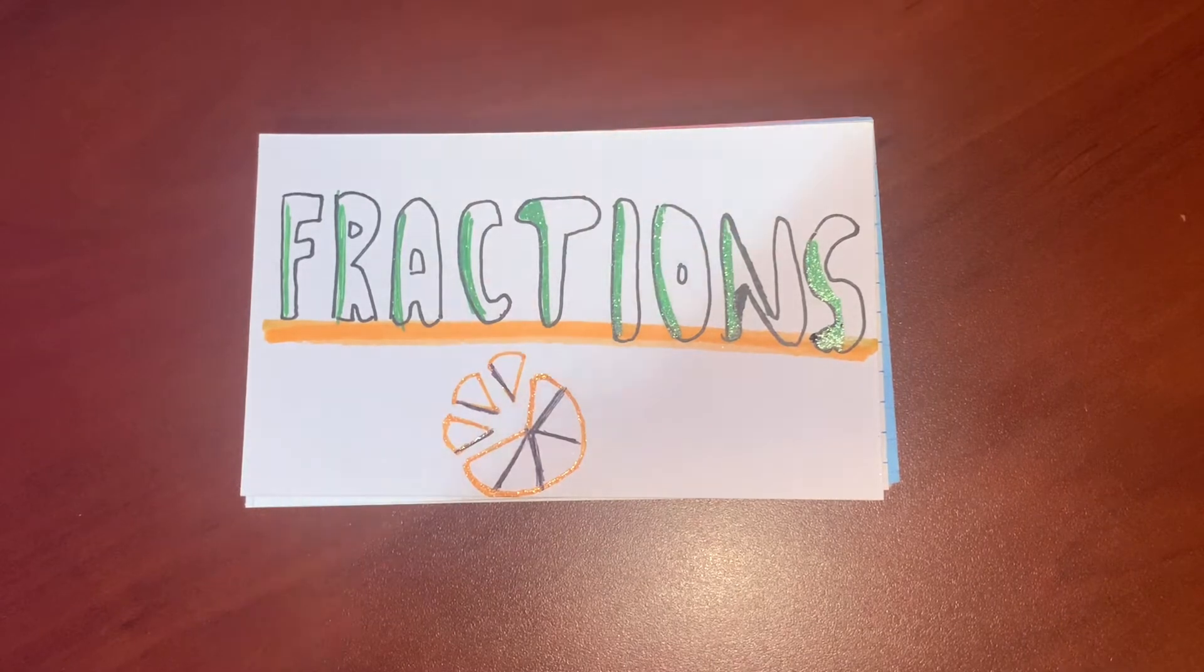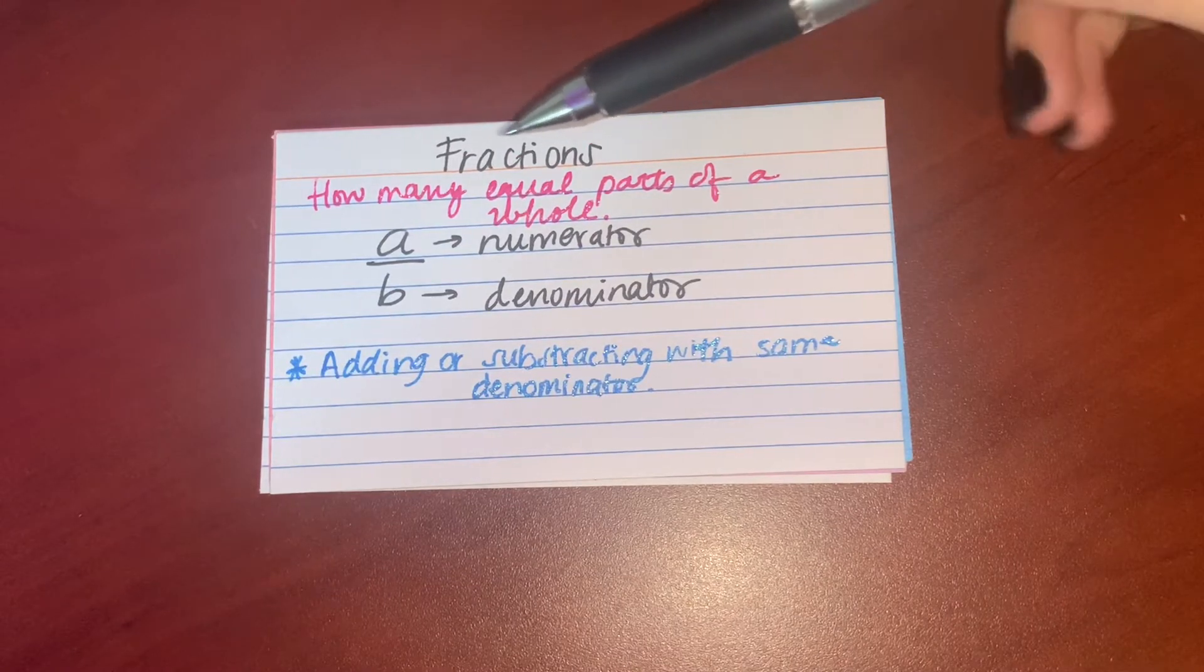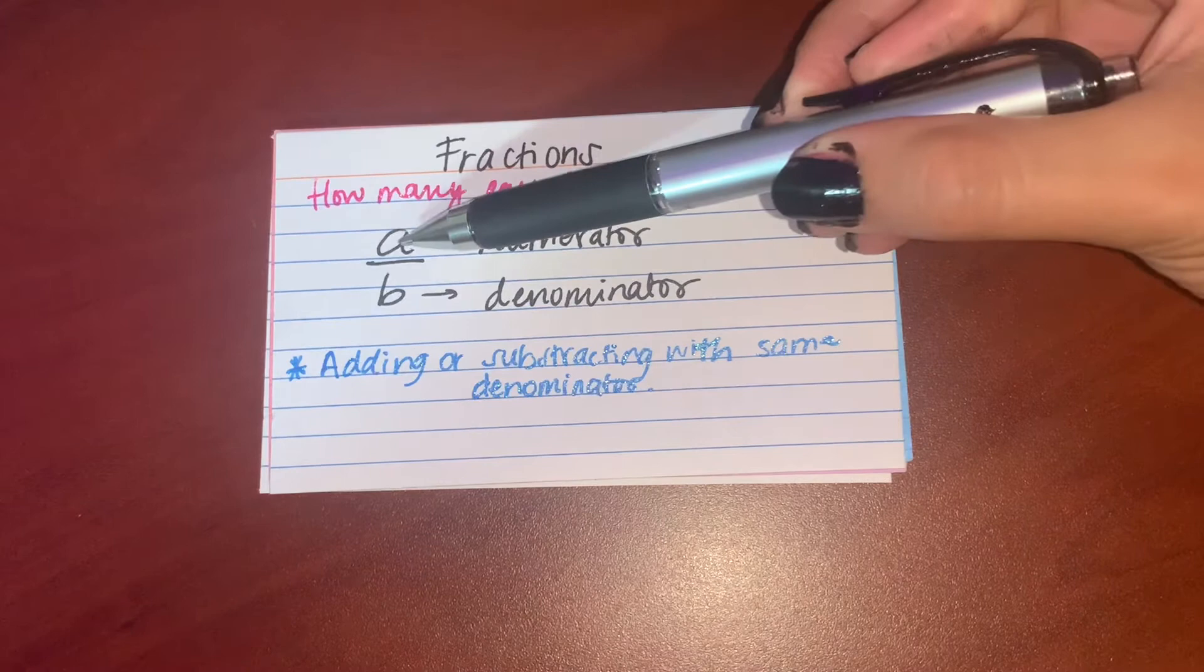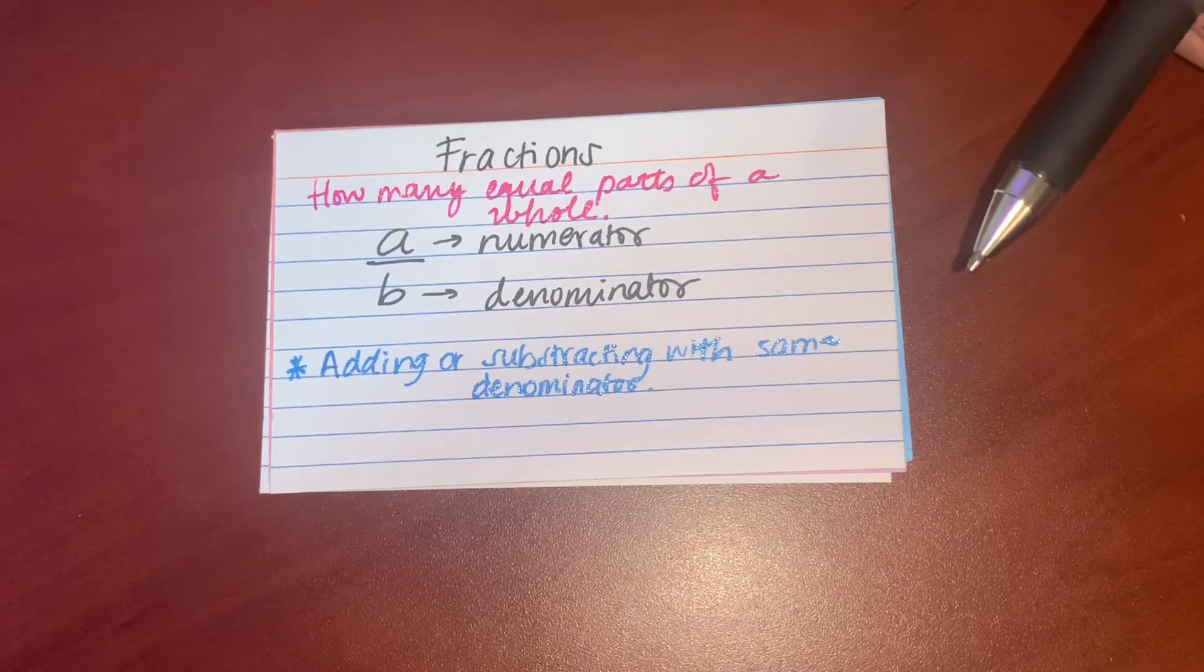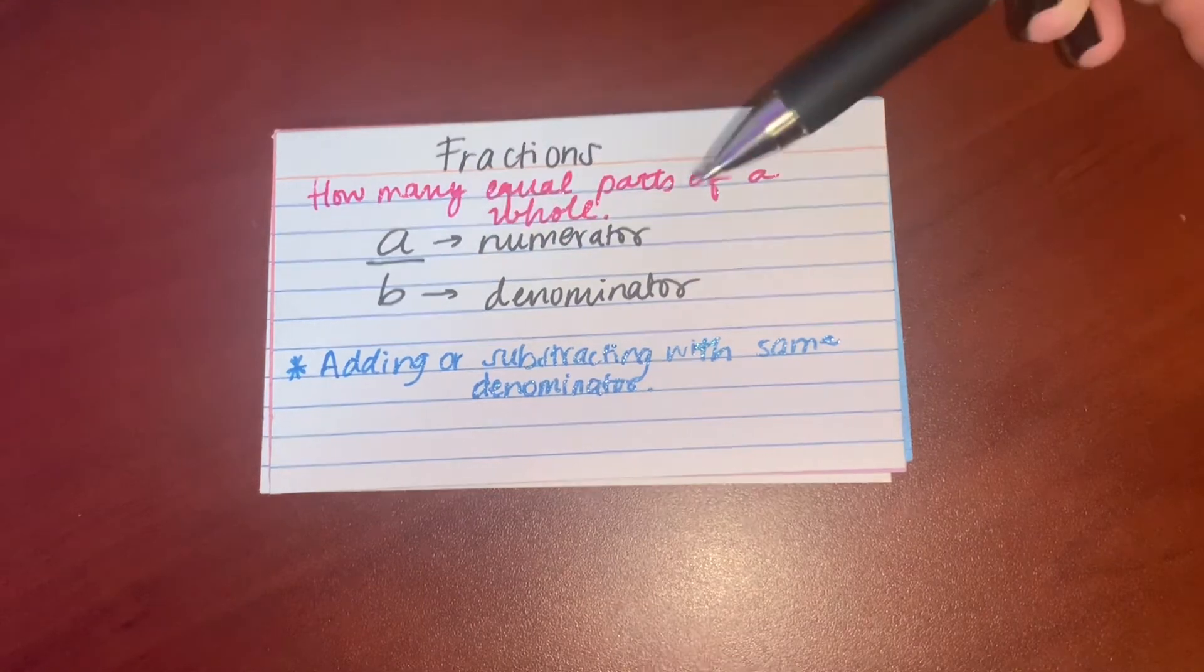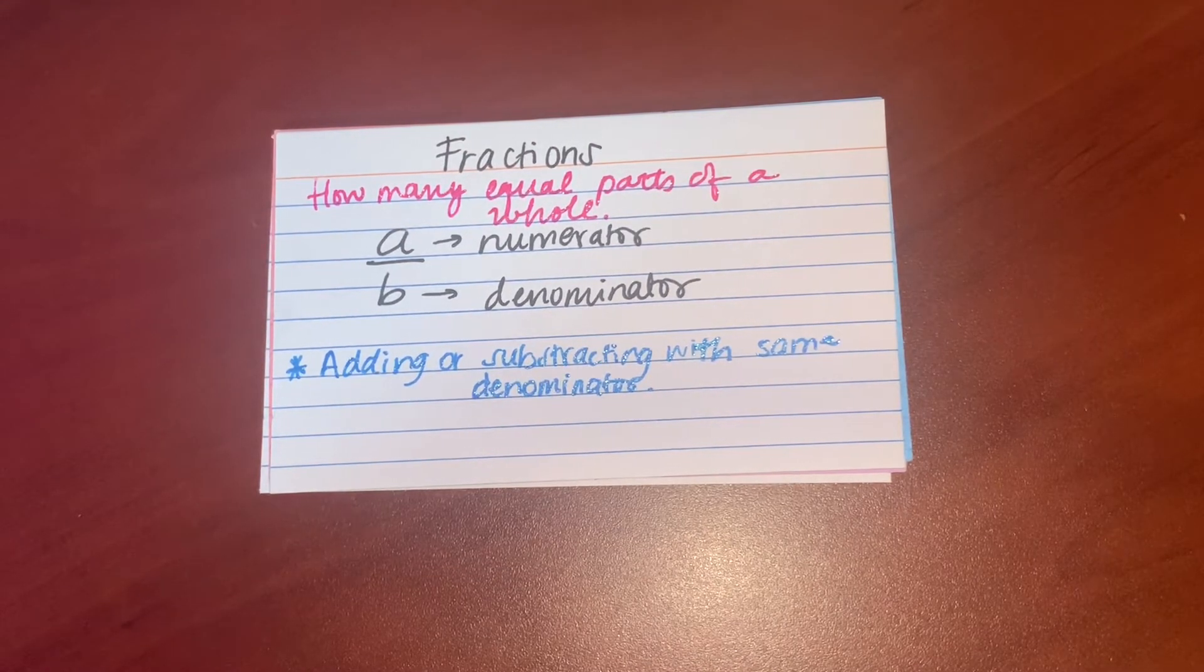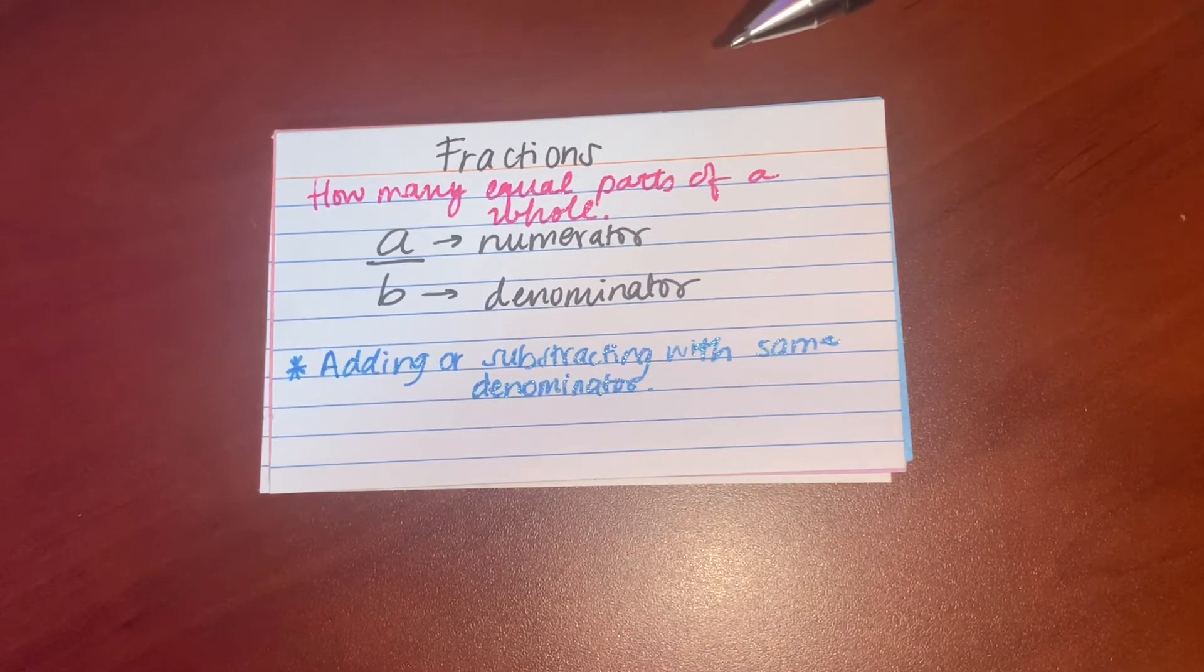So let's start. Fractions—a fraction means how many equal parts of a whole. It's basically like a proportion. We get it in this way: a over b. What does that mean? So a is gonna be the top part and it's called the numerator, whereas the lower part, the b, is the denominator. I'll be referring and using these two terms frequently throughout the rest of the video, so you guys need to familiarize yourself that the top part is a numerator and the lower part is a denominator.